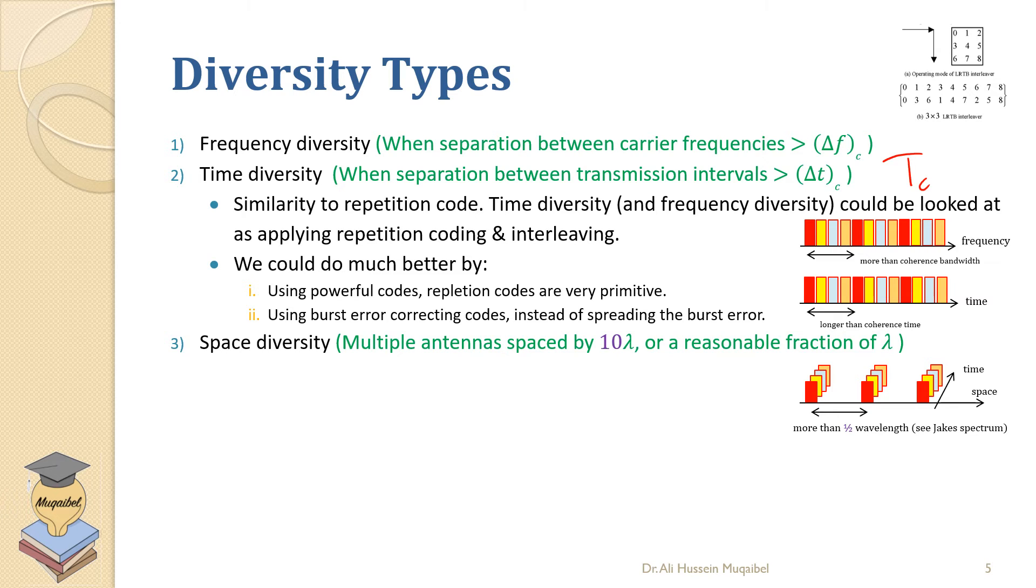We can also have space diversity where multiple antennas are spaced by 10 lambda or any other reasonable fraction of lambda. Some would say just 0.5 lambda or 0.38 lambda is enough to make sure that those antennas are going to give you different signals. That's called space diversity or antenna diversity.